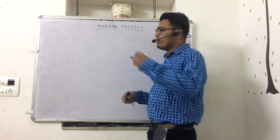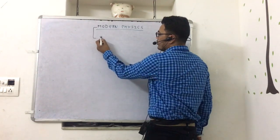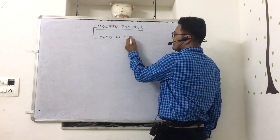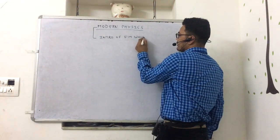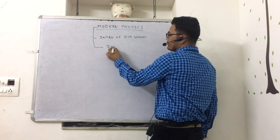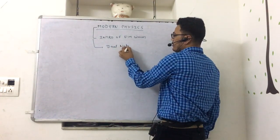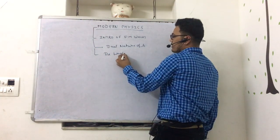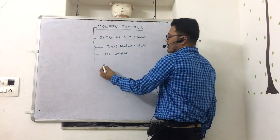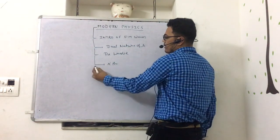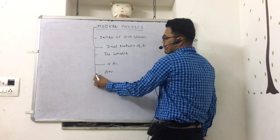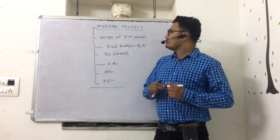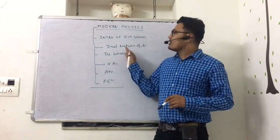We will start with the introduction of EM waves, then the Dual Nature of Light, the De Broglie Equation, X-ray, Atomic Structure, Photo-Electric Effect, and other things. This is a very simple chapter, and the important thing is that the questions are very logical.